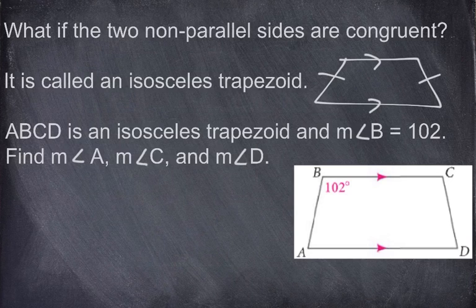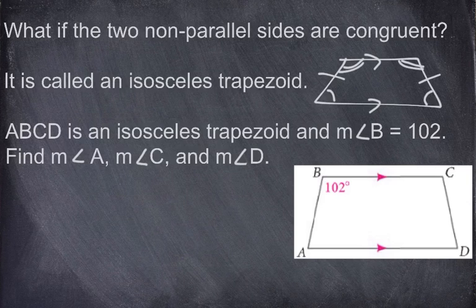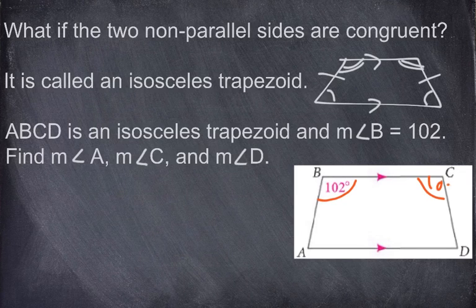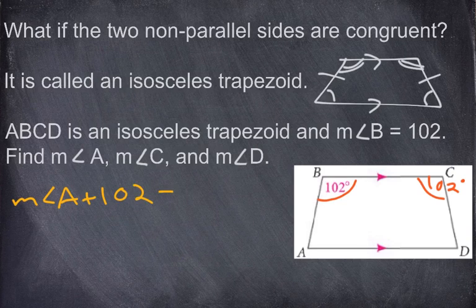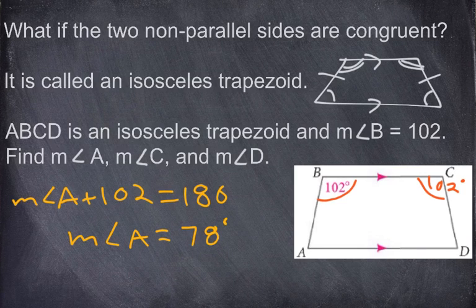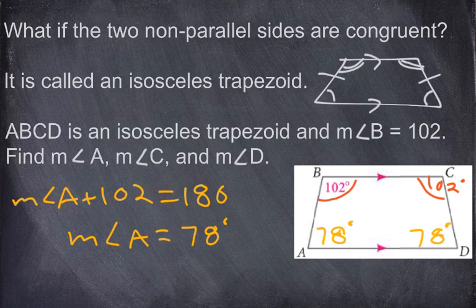Not only are the legs congruent, but the two base angles will be congruent to each other, and the two top angles will be congruent to each other. So we know this 102 degrees is congruent to angle C, which is also 102 degrees. Angle A and angle B are supplementary, so the measurement of angle A plus 102 equals 180. Subtracting, we get 78 degrees. So angle A is 78 degrees, and since it's isosceles, angle D is also 78 degrees.